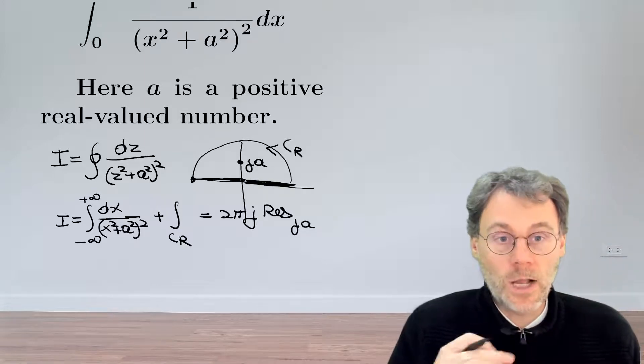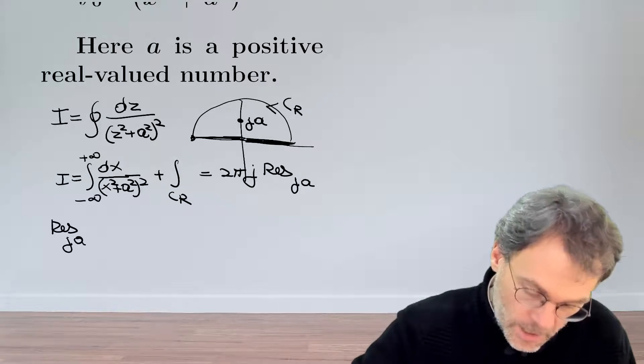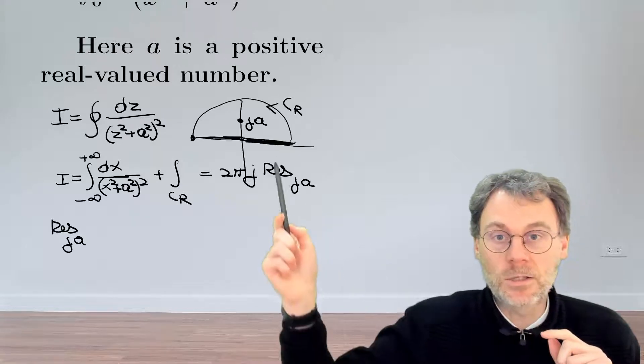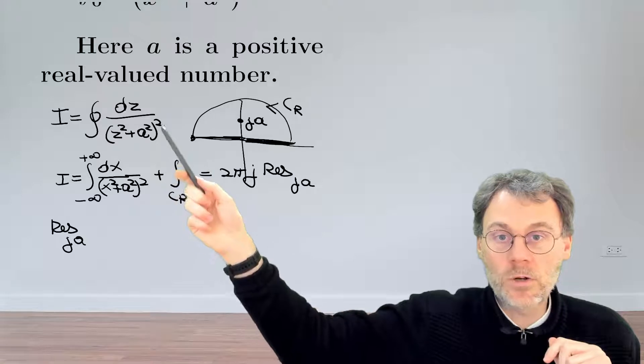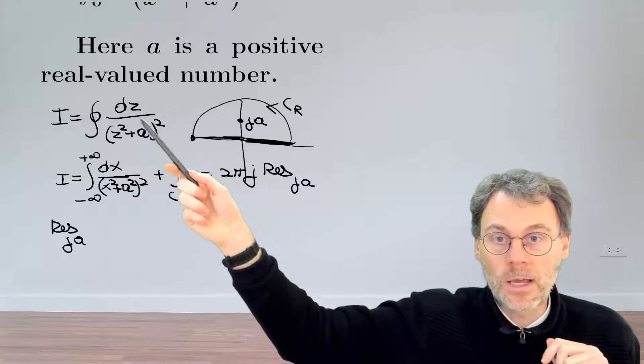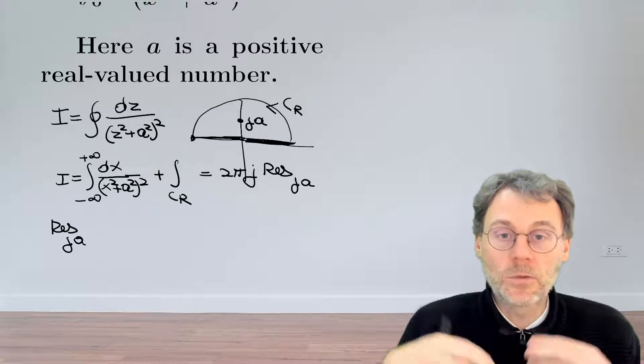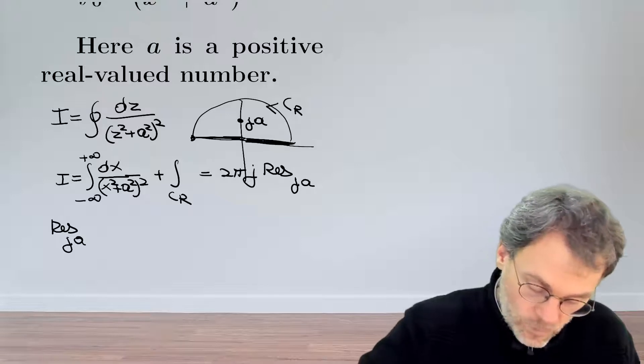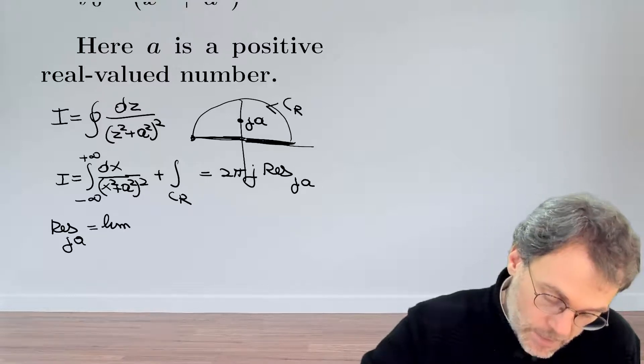So residue at ja. The problem in this case, well not really a problem, the fact is that ja here is not a pole of order one, as you can see here, but a pole of order two thanks to this nasty exponent over here. So this means that we cannot use the simple formula but rather we need to use the more complicated looking formula saying that we can calculate this residue as the limit...